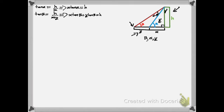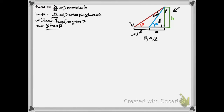Now to solve these, we equate the two left-hand sides since both right-hand sides equal h. Subtracting x·tan(beta) from both sides and factoring gives x times (tan(alpha) minus tan(beta)) equals y·tan(beta). Dividing both sides, x equals y·tan(beta) over (tan(alpha) minus tan(beta)).